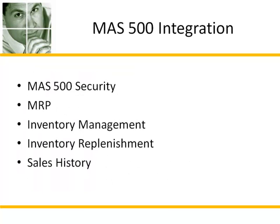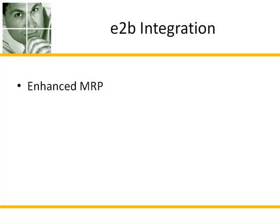The Sales Forecasting Module is written using the MAS 500 toolset and is integrated with MAS 500 Security, MRP, Inventory Management, Inventory Replenishment, and Sales History. The Forecasting Module is also integrated with the E2B Enhanced MRP Product.